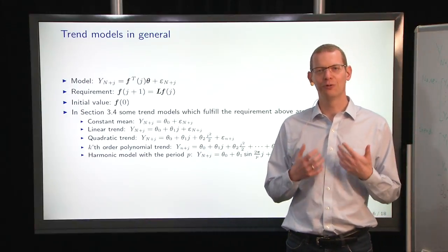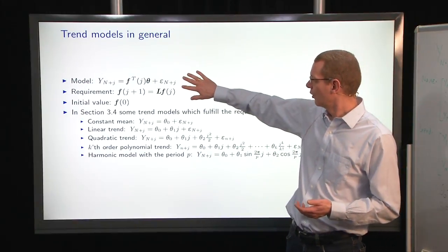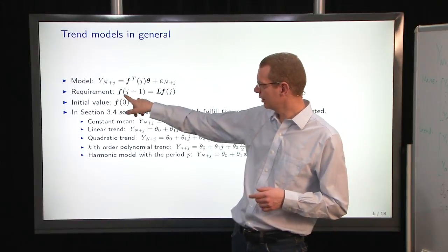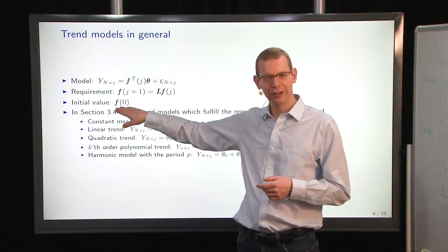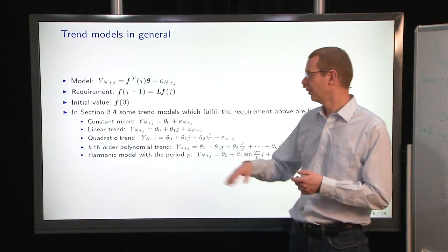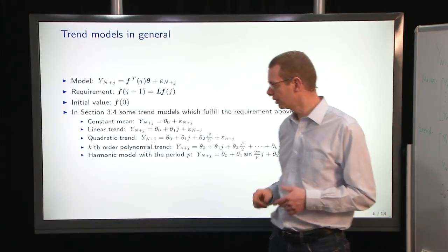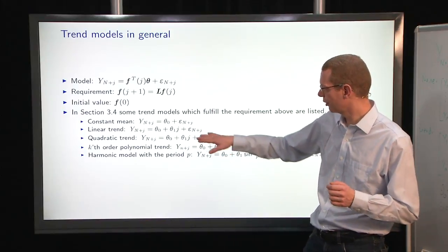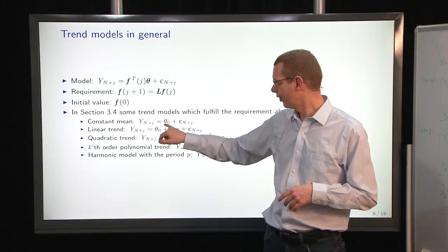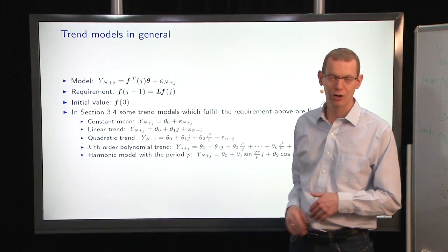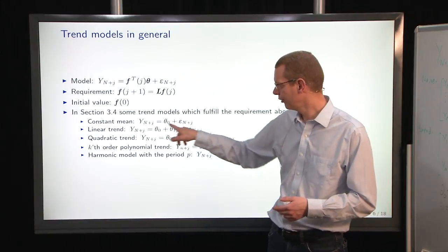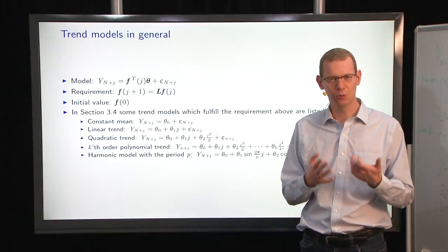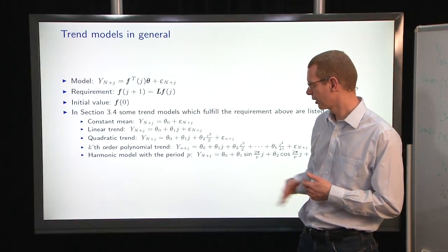What we require is that we can get a step forward in time by pre-multiplying L on f of j to get f of j plus 1. We have to specify an initial value for the linear regression model. For the linear model, f of 0 is just a 1 and a 0 as a column vector, but you can do many more complicated models as well, also simpler models. The most simple model is what is called the constant mean model, where we just have a theta 0, and that means f of j always equals 1, no matter what j is.